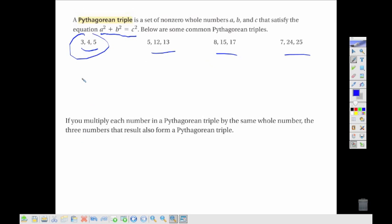For example, with these, if I wanted to multiply everything by 2, then 6, 8, and 10 would also work, or maybe I multiplied everything by 4. That would give me 12, 16, and 20. That would also be a Pythagorean Triple, and we could do the same thing with any of these Pythagorean Triples. Multiply them by some multiple to get a new set of Pythagorean Triples.